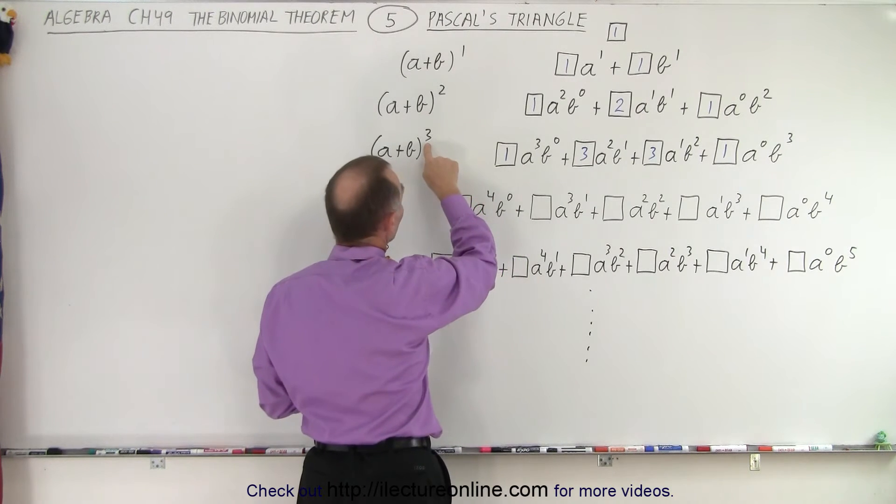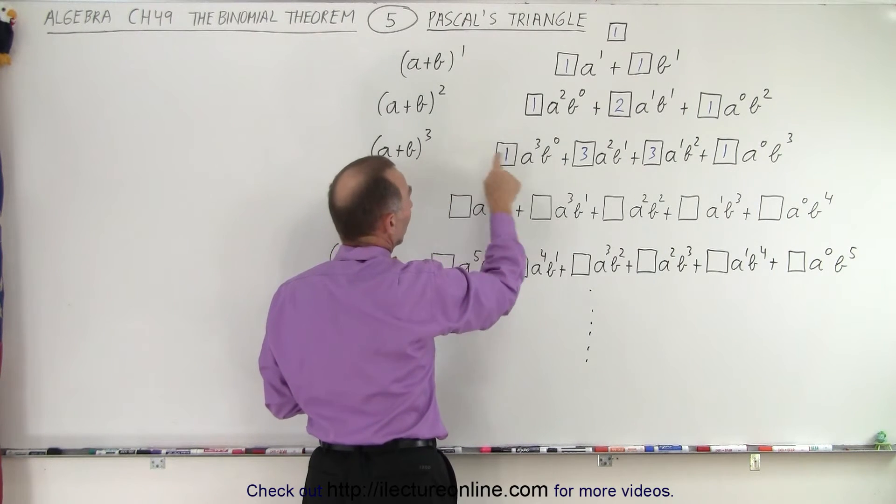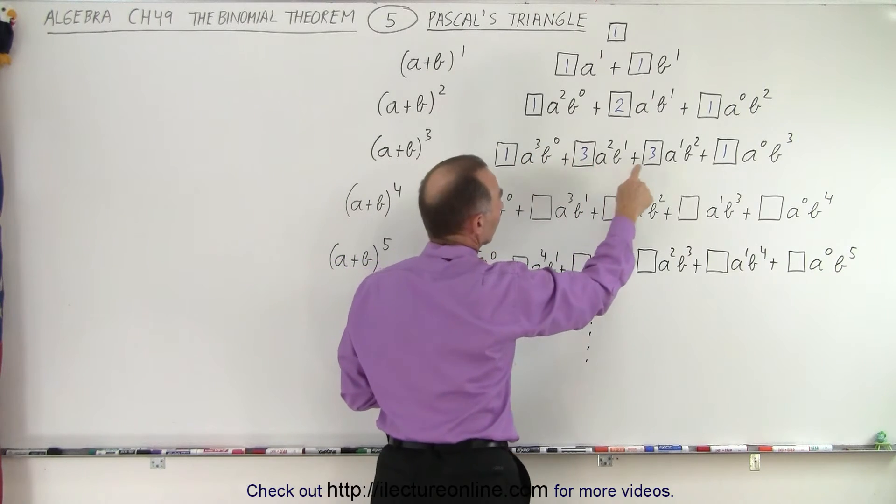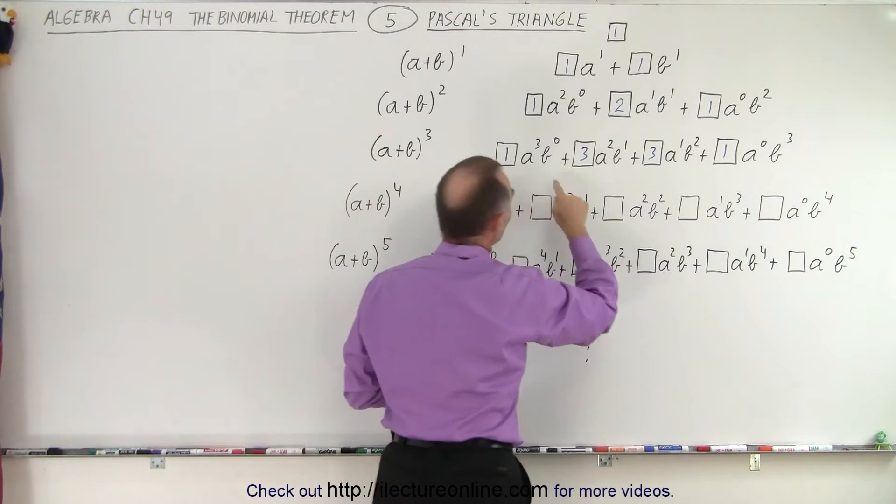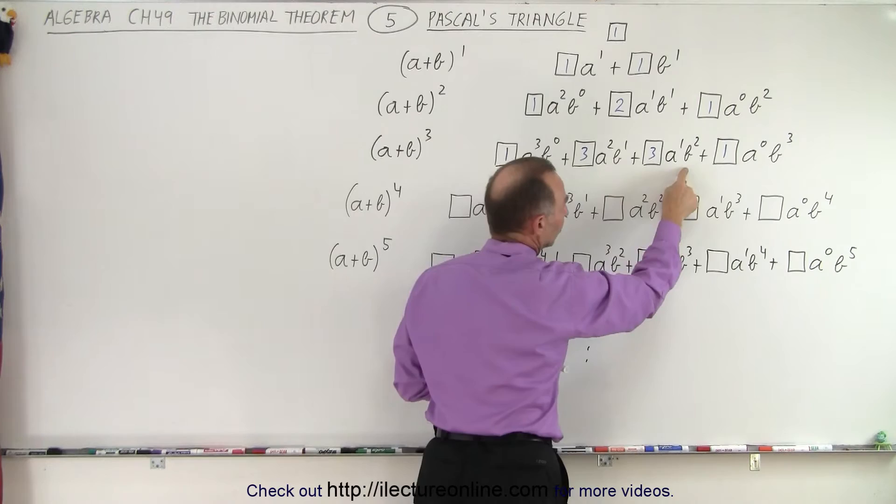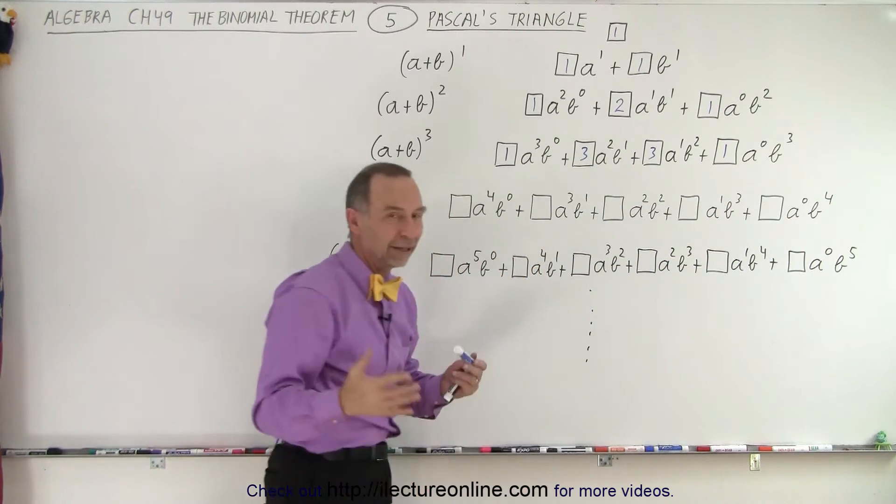For the exponents, in this case, we have a 3 there, a plus b to the third power, so we have a to the third, a to the second, a to the first, a to the 0, b to the 0, b to the 1, b to the second power, b to the third power. And that's the pattern.